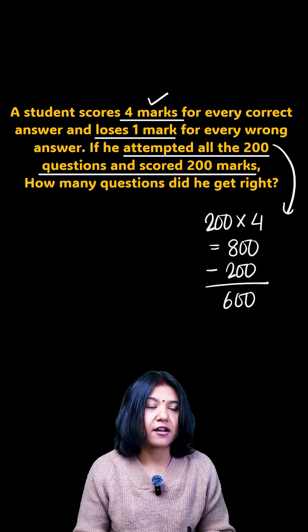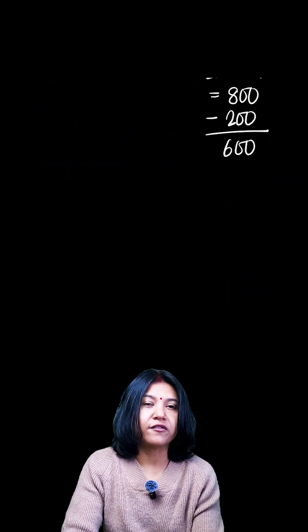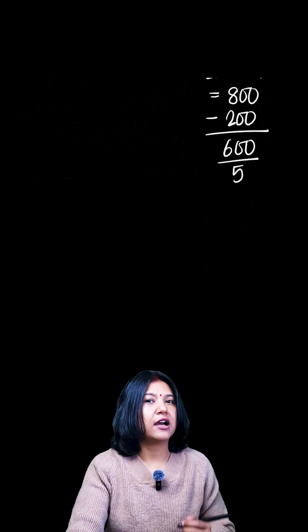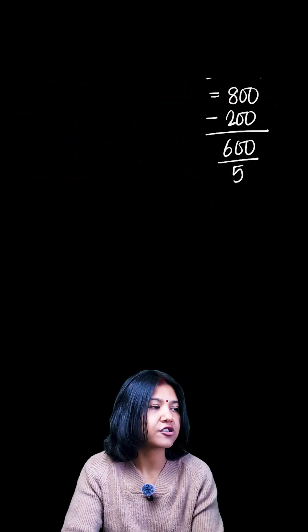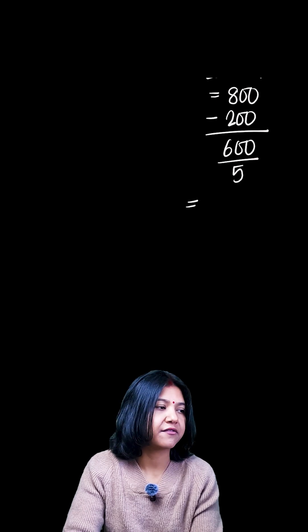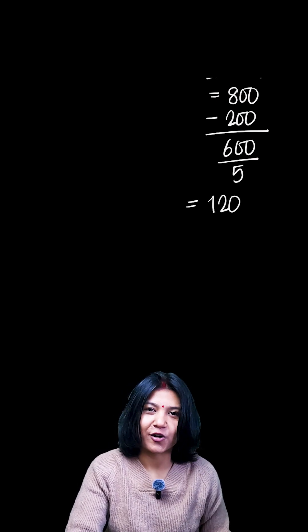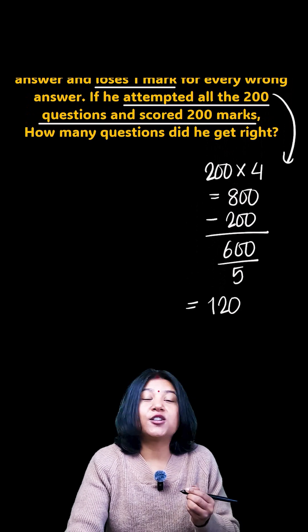I divide that by the marks lost per question. So I know I'll lose five marks for every wrong question. Dividing 600 by five gives me 120, which means 120 questions you went wrong. Okay, you had attempted a total of 200 questions.